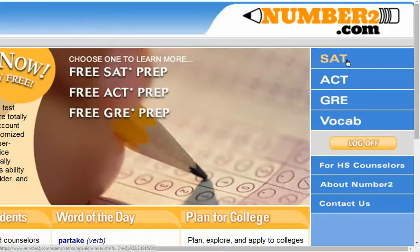The SAT and ACT are both options — ACT is gaining ground, and some schools prefer it over the SAT. Best thing is to check the schools you plan to apply to. We alternate between SAT and ACT prep. GRE stands for Graduate Record Examination, used for graduate school admissions. Vocabulary is a separate section, though it's built into ACT and SAT prep as we'll see.